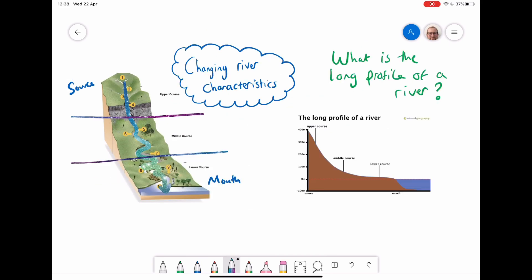Next we need to work out what is the long profile of the river. The long profile of the river is simply the changes in the gradient or the steepness of the river as it goes over the entire length of its course from source to mouth.